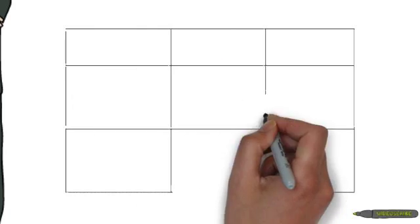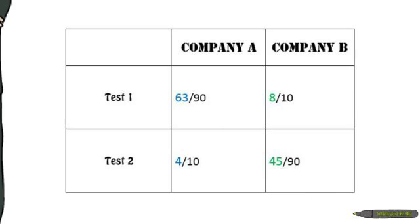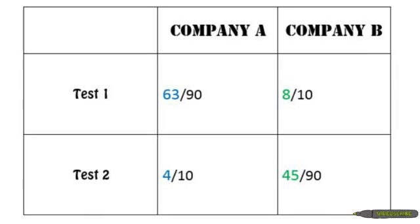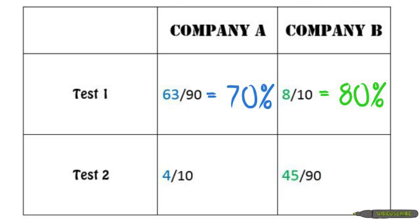This research team conducted two rounds of experiments on both of the drugs, testing different numbers of people infected and showing how many were cured. In the first round of testing, Company A cured 63 out of 90 infected people, giving it a success rate of 70%. Company B cured 8 out of 10, giving it a success rate of 80%.